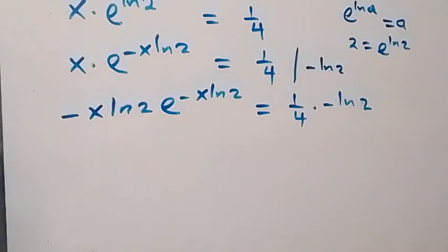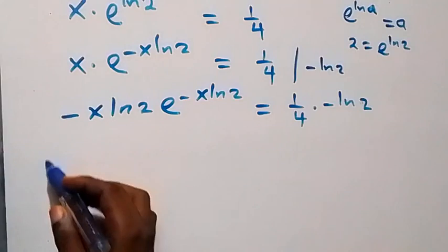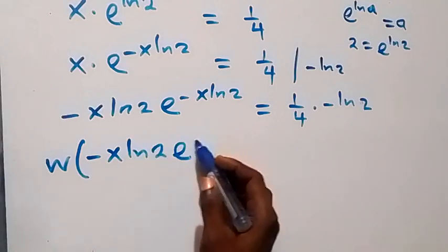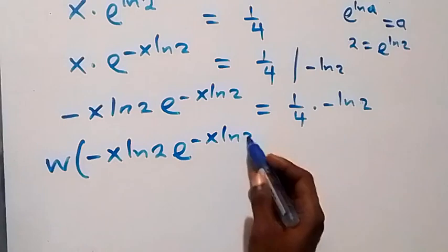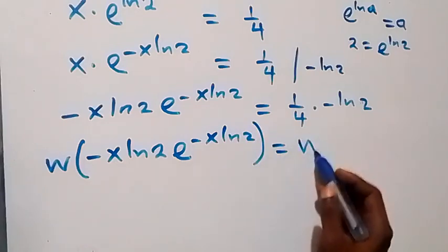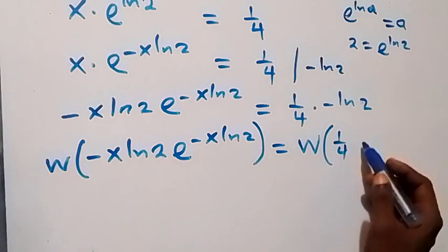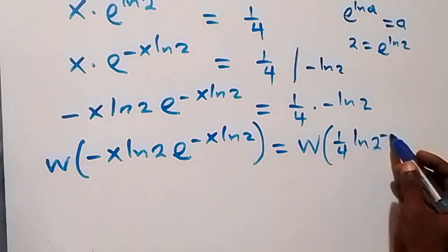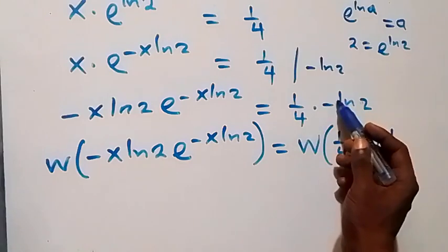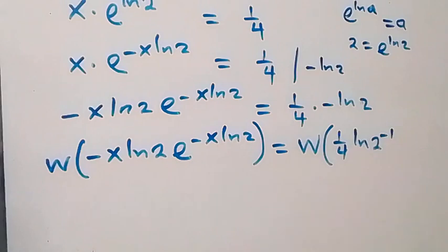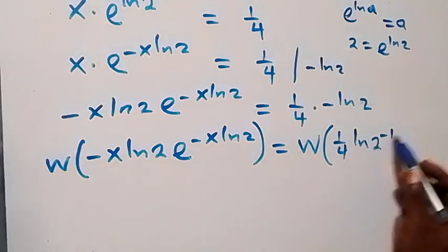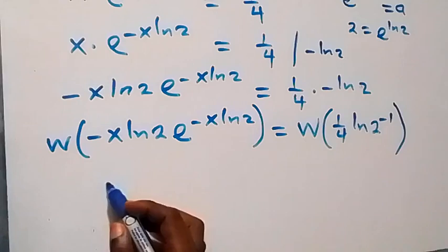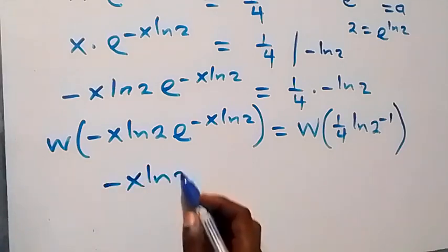When we introduce the W function on both sides, we have W(minus x·ln2 · e^(minus x·ln2)) equals W(1/4 · (minus ln2)). We can factor out the minus and write ln2 as ln2 raised to power minus 1. Since the power and coefficient are now equal, the left side becomes minus x·ln2 from Lambert's W function.